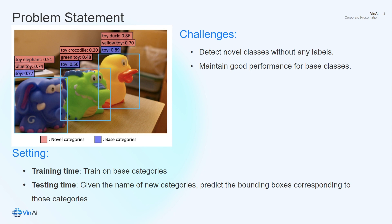We describe the problem. In training time, we are only given the base categories, and at test time, we also have to predict bounding boxes corresponding to unseen categories. For example, given Toy as a base class, we need to predict novel classes such as Toy Elephant and Toy Crocodile. We have to detect novel classes without seeing any examples during training, and we also have to maintain good performance for base classes during inference.